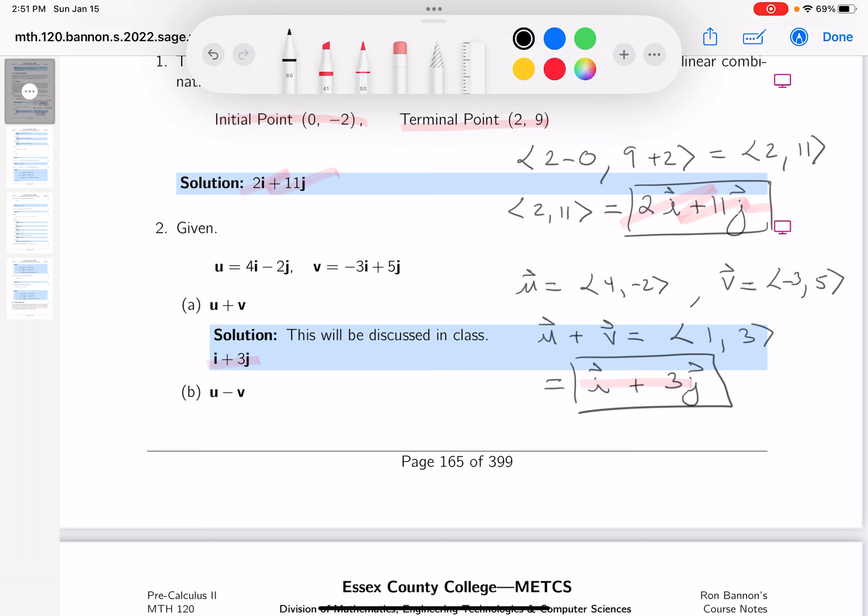The next one is u plus -1 times v. Let me write that down. So u is 4, -2, and that's plus -1 times v. That's a scalar multiple. What do you get? You get 3, -5.